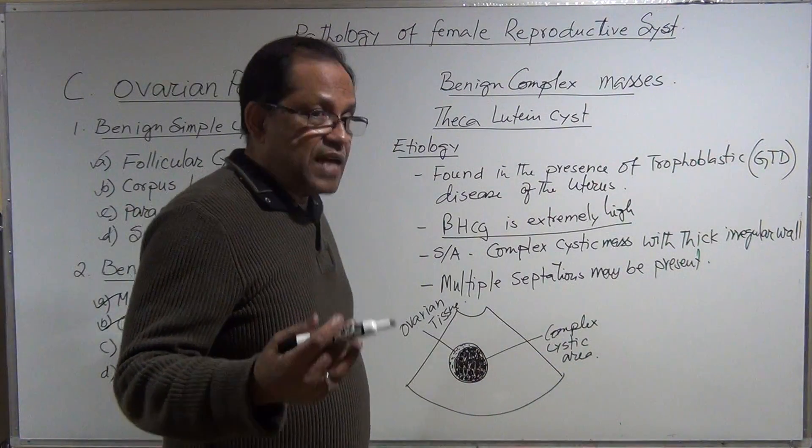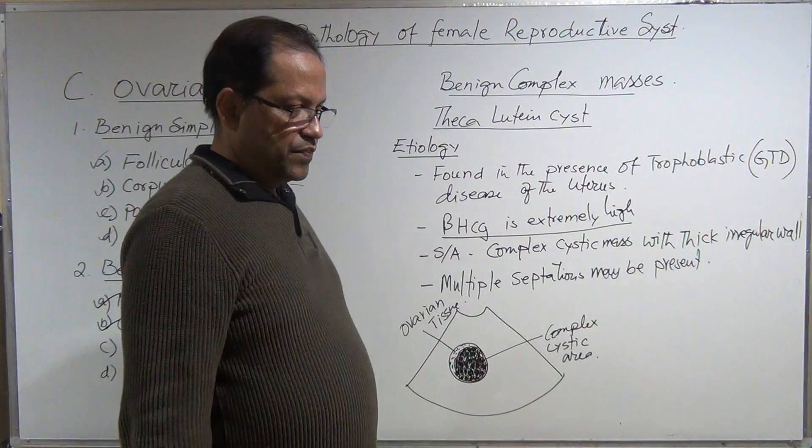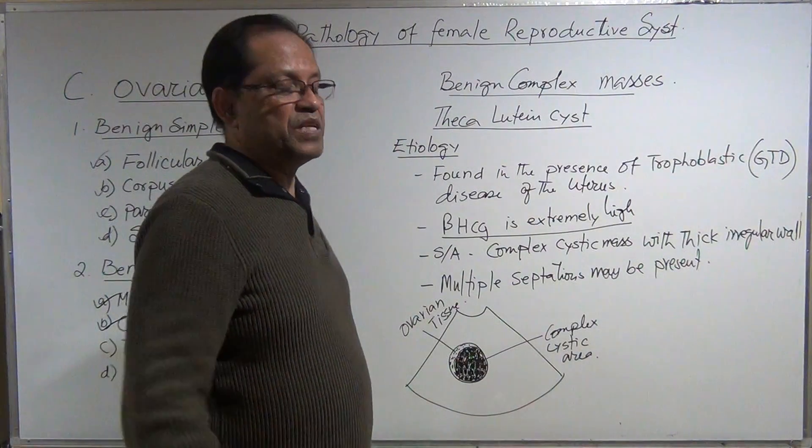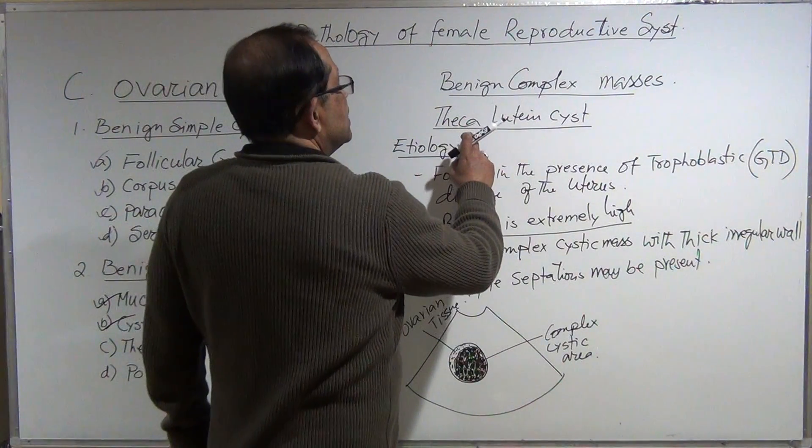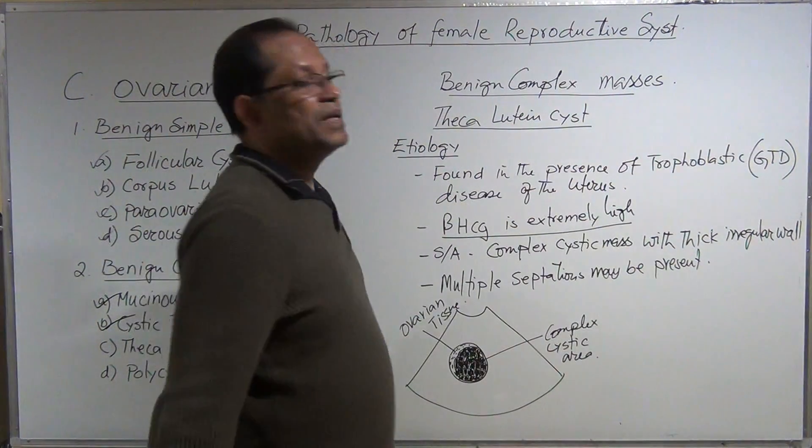Sometimes the ovary is hyper-stimulated with some medicine or any cause—the ovaries are hyper-stimulated. You will see the beta hCG level is high.